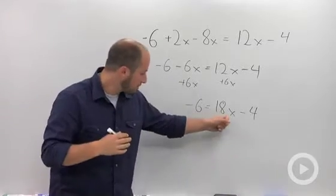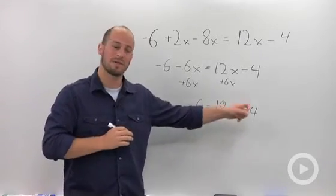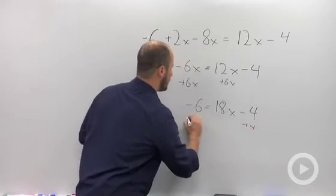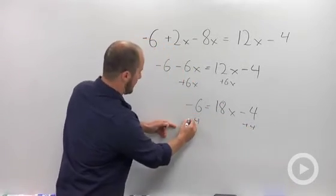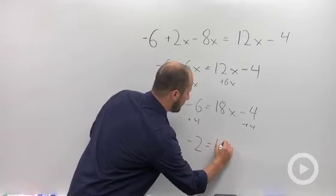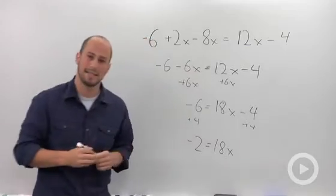OK. Again, trying to get our x by itself. So add the 4 over. Add 4 to both sides. Add 4. Negative 6 plus 4. Negative 2 is equal to 18x.